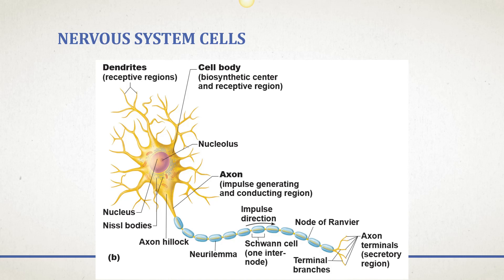And now we finally get to a neuron. There are several parts you need to know. The dendrites are the receptive regions — they contain receptors and receive signals. The cell body contains all of the major organelles of the neuron. Right here is the axon hillock, which is where the signal accumulates. We're going to talk more about that in just a little bit.